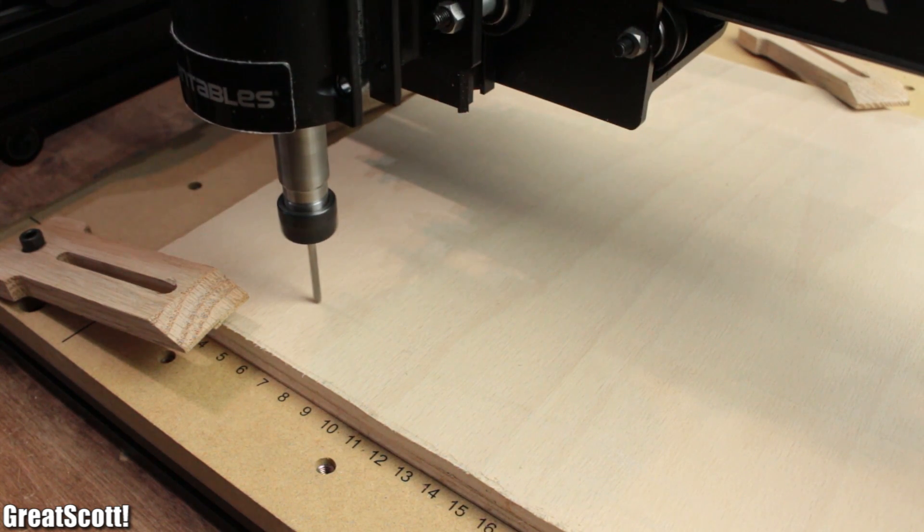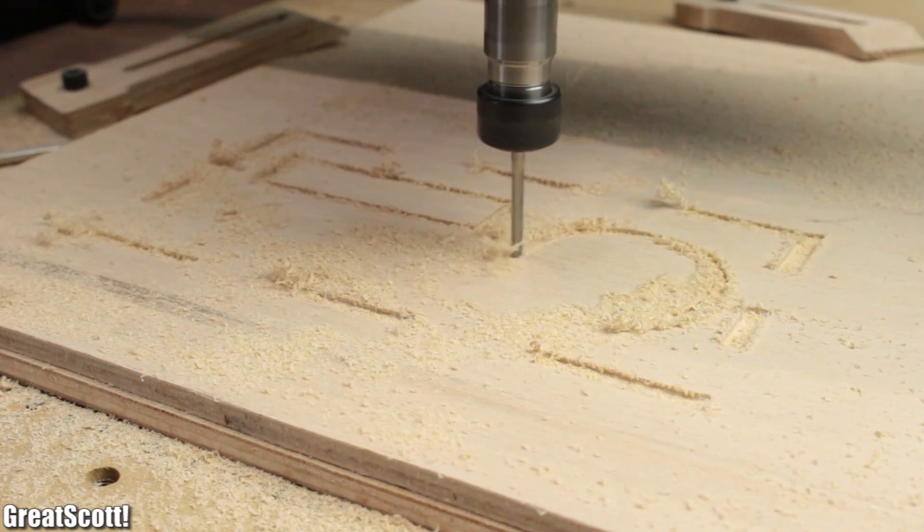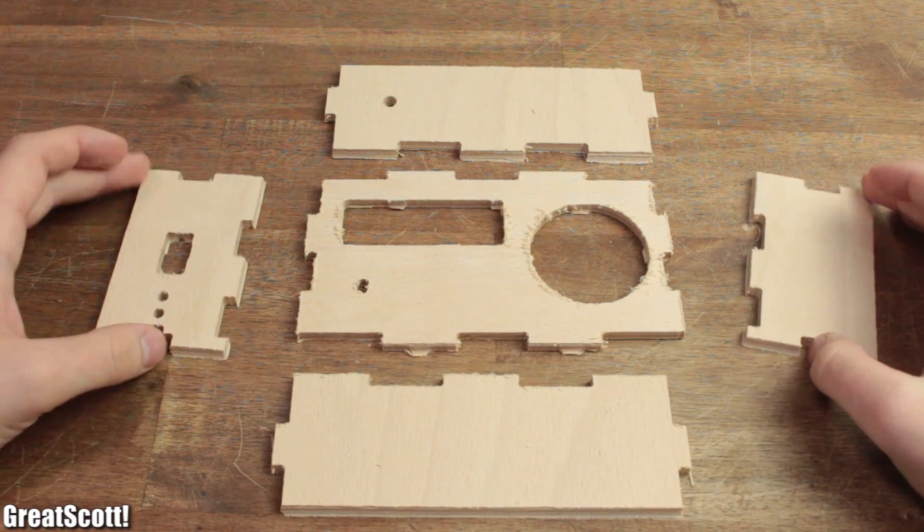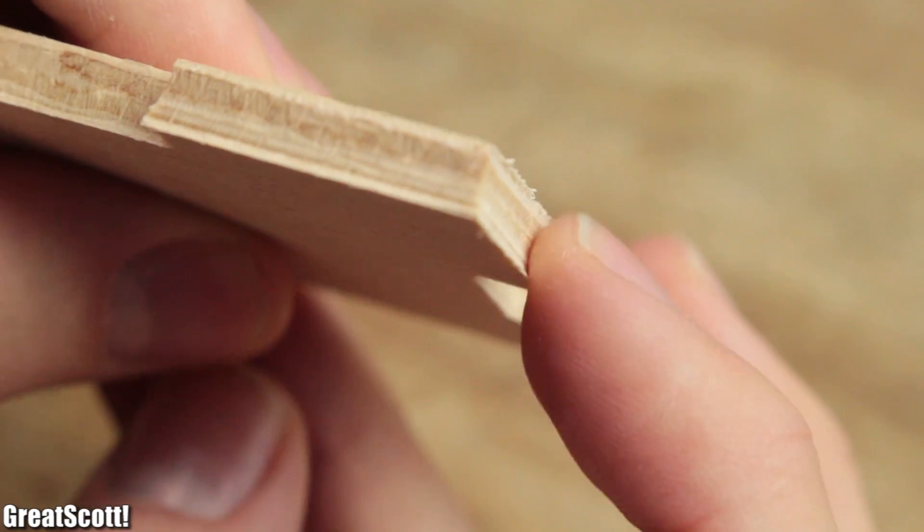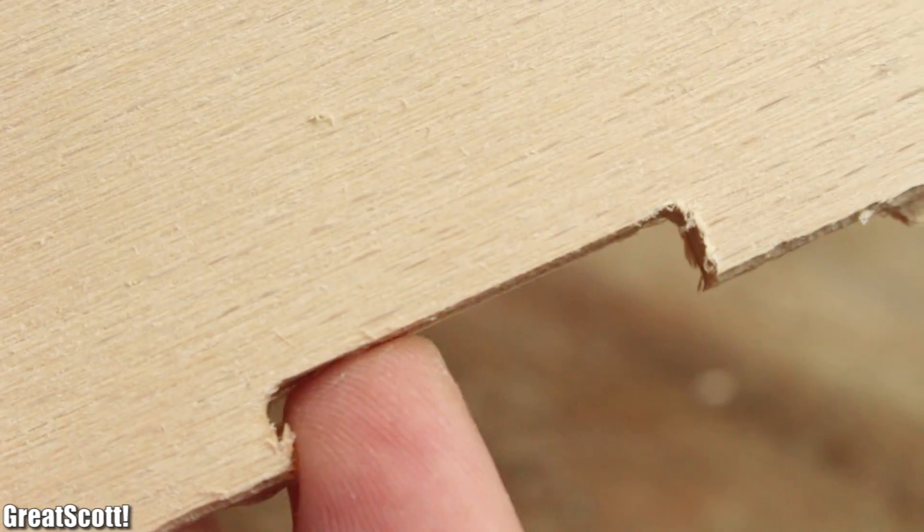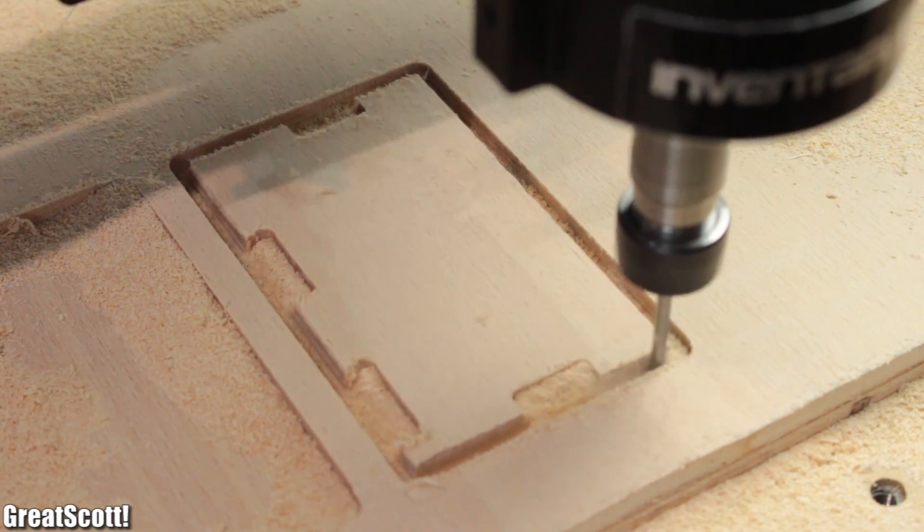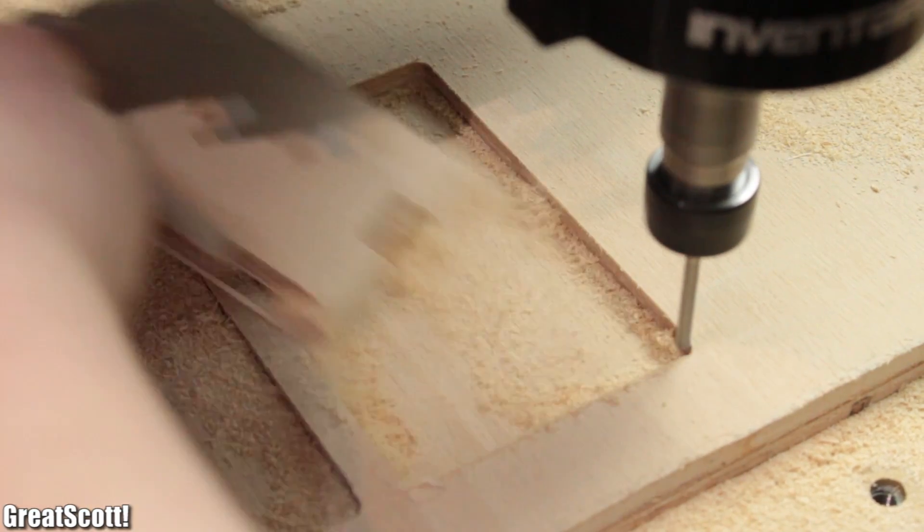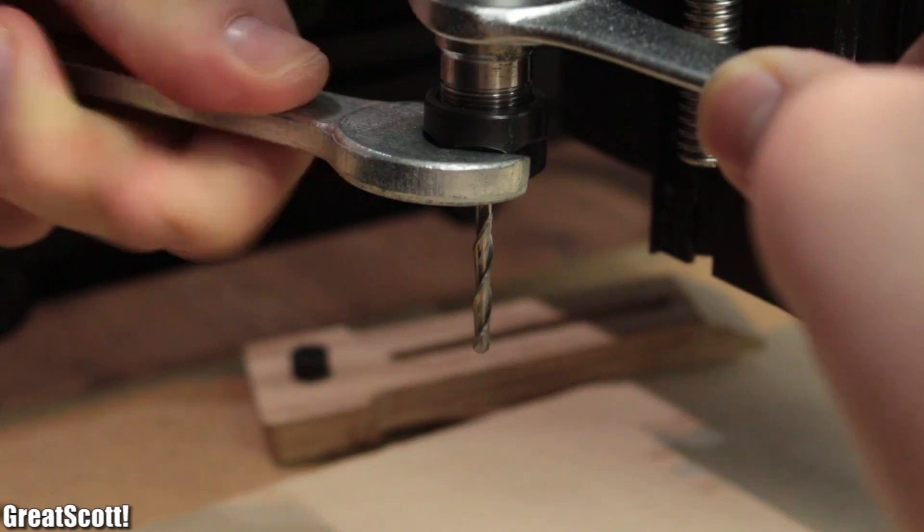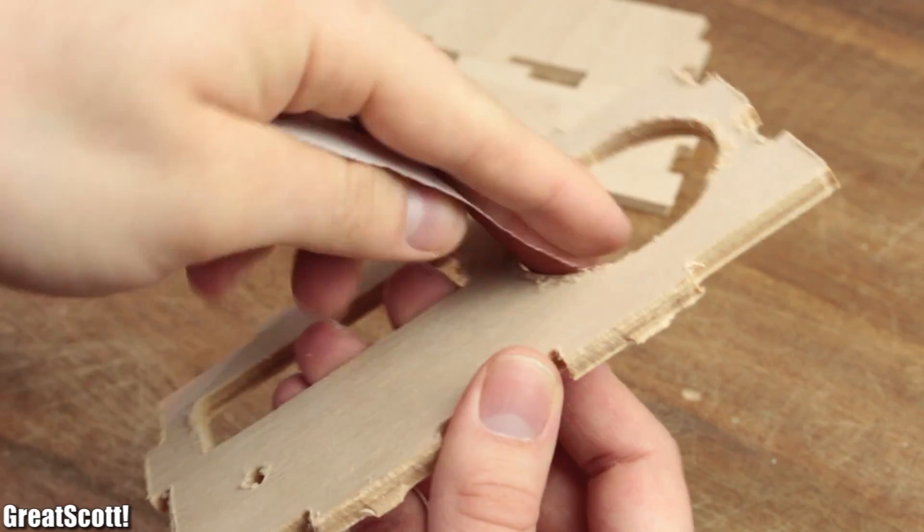Then I started the milling process which took approximately 3 hours in total and resulted into not that awesome looking straight lines and round edges. But the reason for that was that I used too low tabs, which means the material broke free before finishing the job and the milling bit I used was also a size too big. Nevertheless...